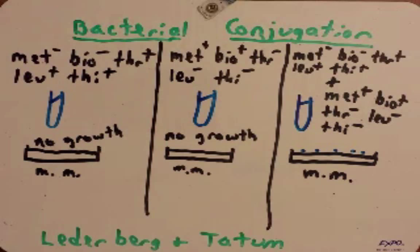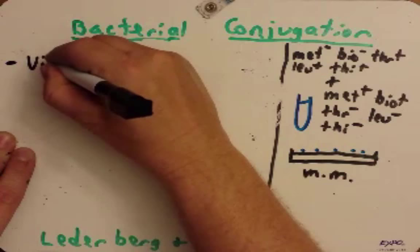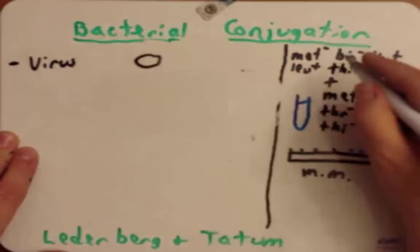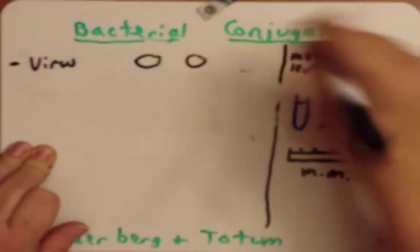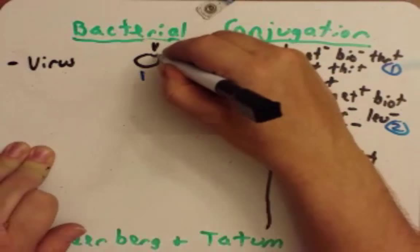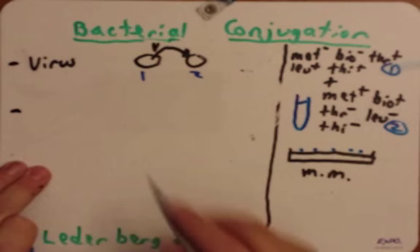So what explains this result? Why can they now grow? We might assume there's a virus transferring DNA — let's call these Strain 1 and Strain 2. It's possible a virus takes DNA from Strain 1 and carries it over to Strain 2. Alternatively, maybe one of the cells died and then the DNA was taken up by the other cell. We know this is called transformation.